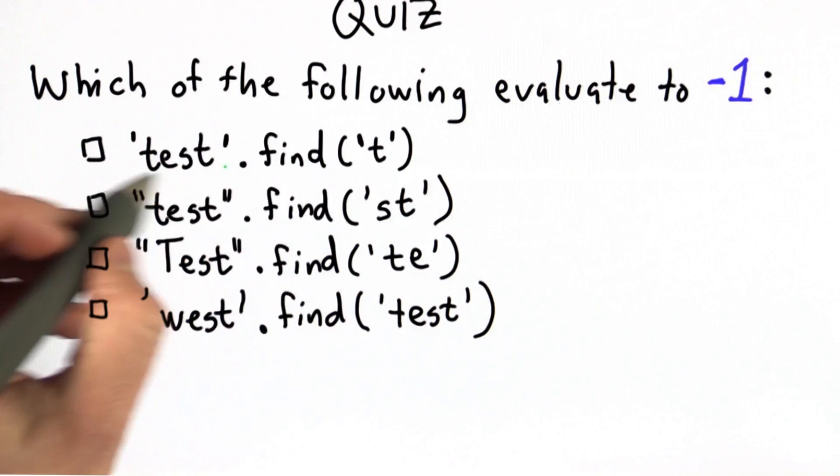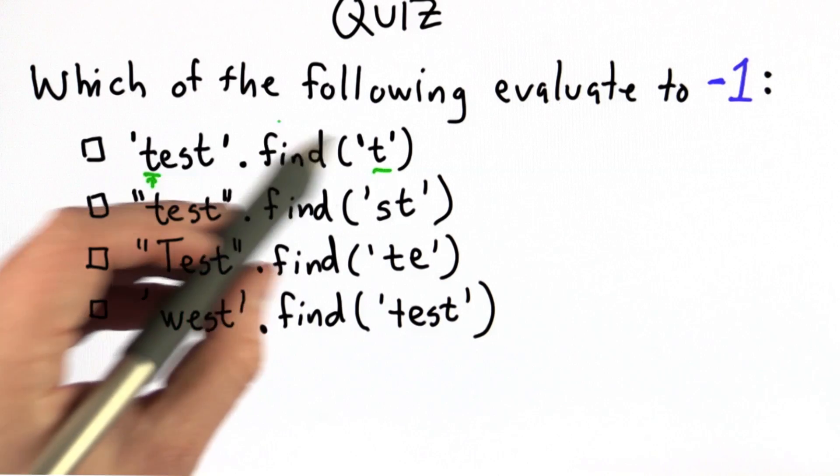So in the first example, we're looking for t within the string test. It occurs in two places, but it'll find the first one. So the result of this find would be 0.